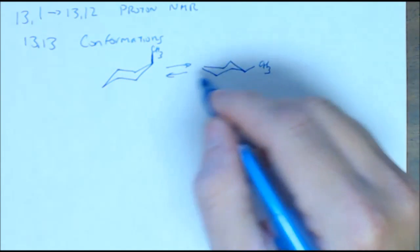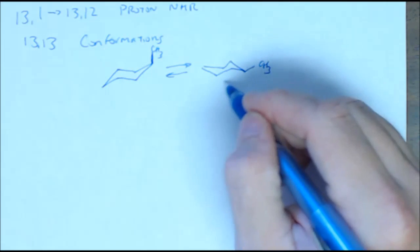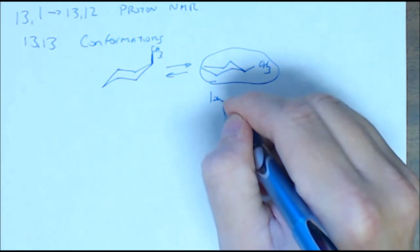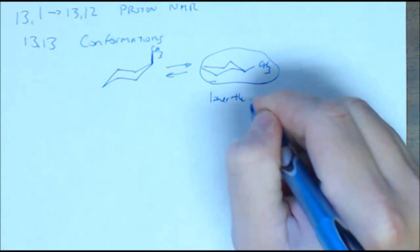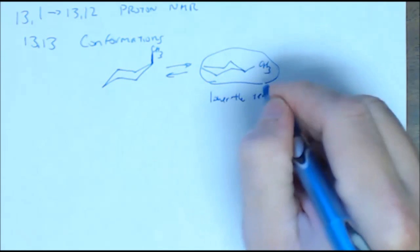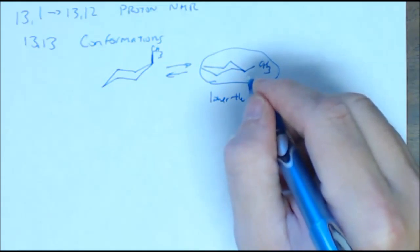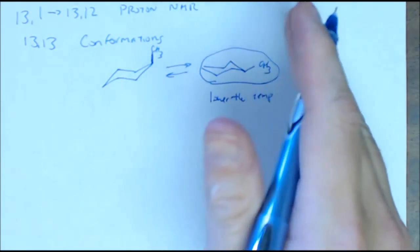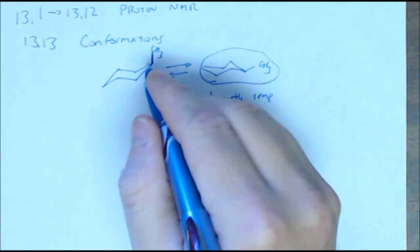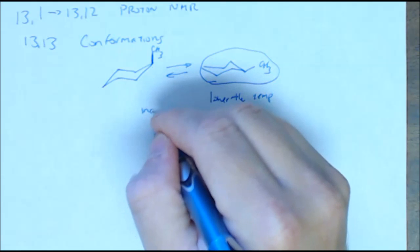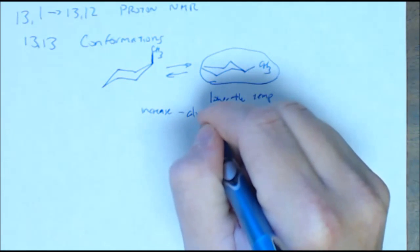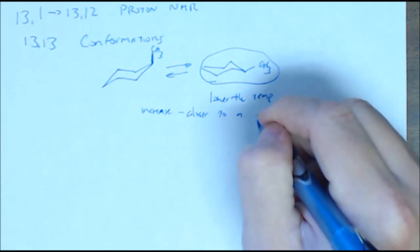Now, if I'm going to try to bias this so that it's more of this particular compound, what I can do is lower the temperature. Now, what I'm going to see is more of this compound because as I lower the temperature, it doesn't interconvert as much. There's not as much energy allowing this thing to pop up into the axial position. If I increase the temperature, I get closer to a 50-50 mixture.